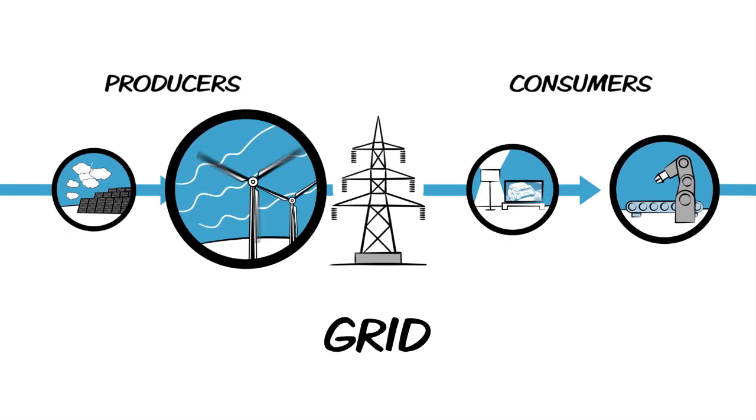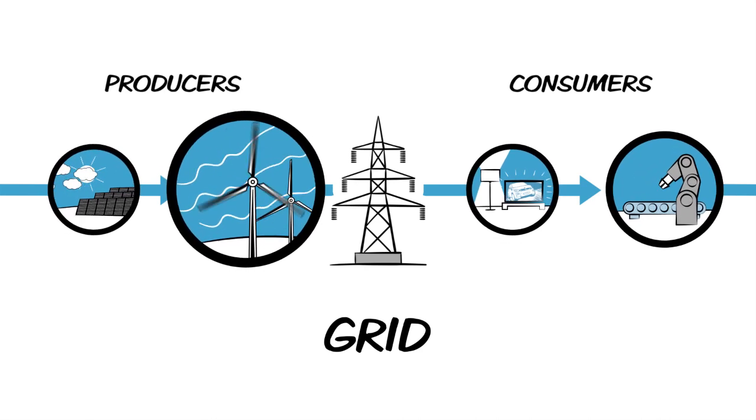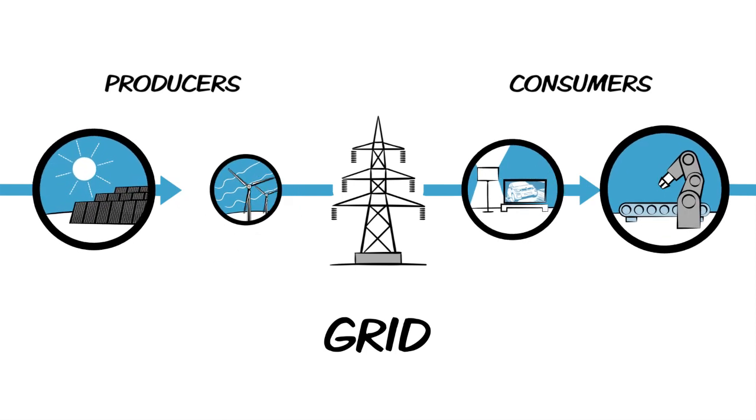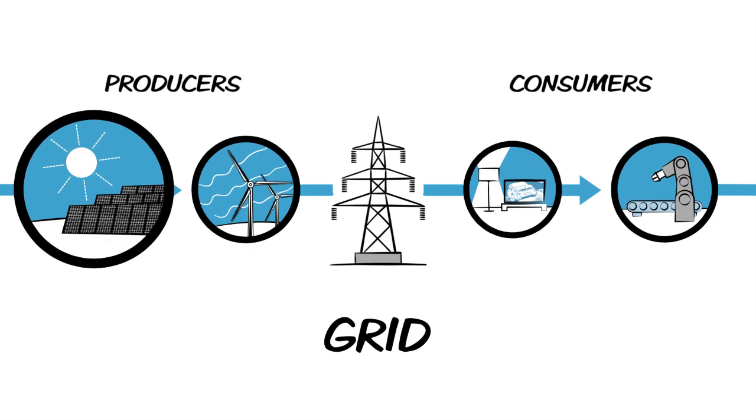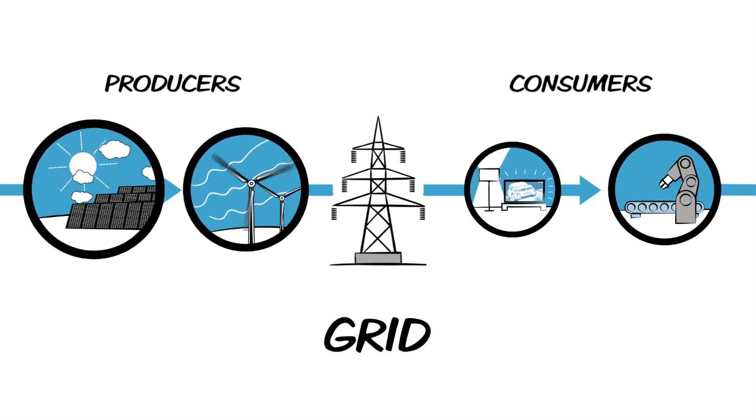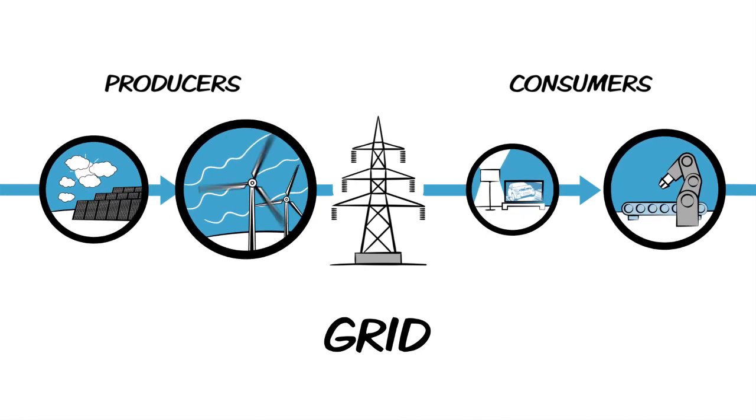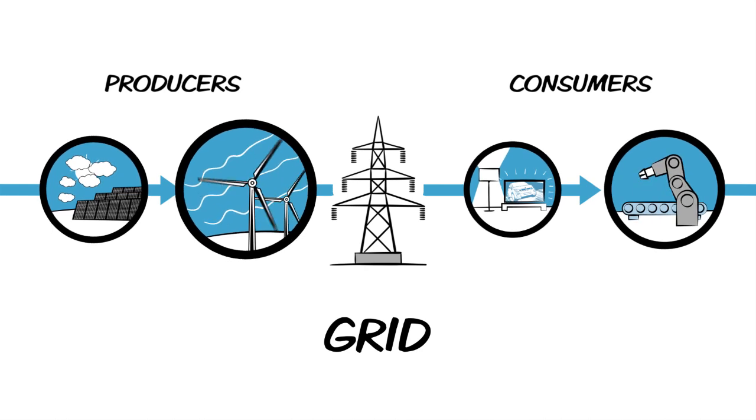But the increasing percentage of renewable energies can also lead to more significant fluctuations in the grid as energy generated from the wind and sun can only be controlled to a limited degree. Energy generation and consumption therefore need to be intelligently coordinated.